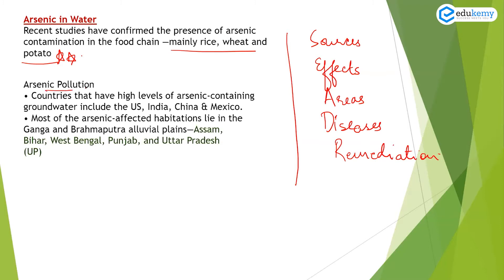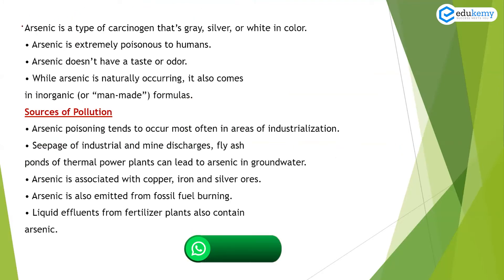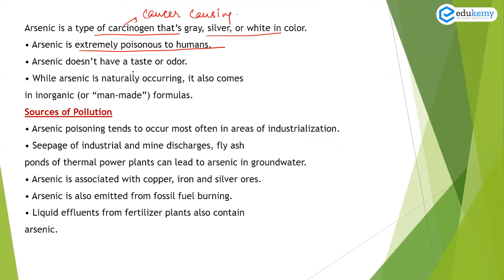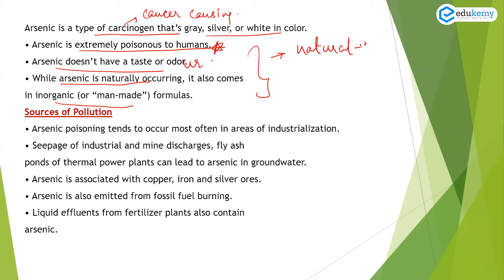The countries with some of the highest groundwater arsenic pollution are the USA, India, China, and Mexico. The affected states in India are Assam, West Bengal, Punjab, and others. The concern about arsenic is that it is a type of carcinogen — cancer-causing. It is gray, silver, or white in color, extremely poisonous to humans, and does not have a taste or odor. While arsenic is naturally occurring, it also comes in inorganic or man-made forms — so arsenic pollution can be from natural plus anthropogenic activities.